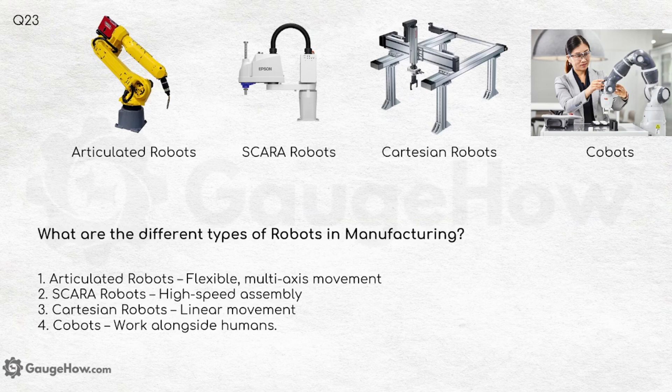What are the different types of robots in manufacturing? First is articulated robots, second is SCARA robots, third is Cartesian robots, and fourth is cobots, which work alongside human beings. The pictures clearly show the differences between all types.